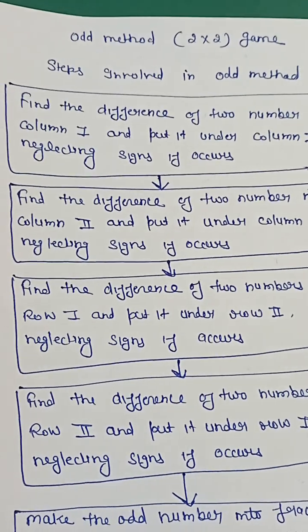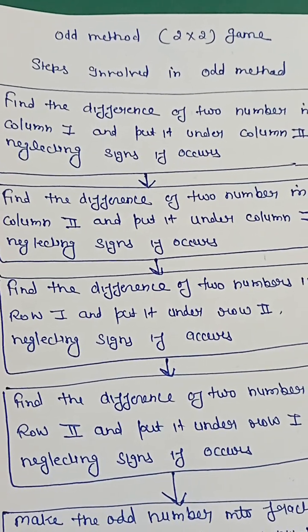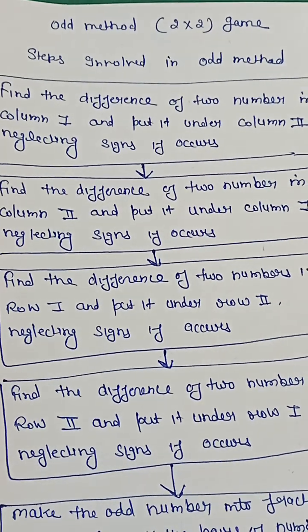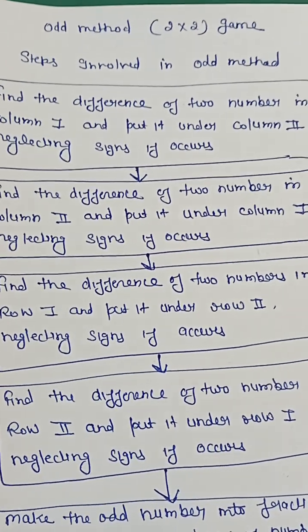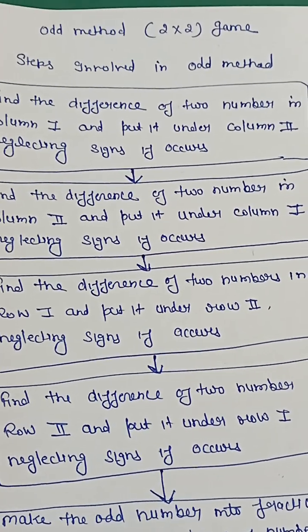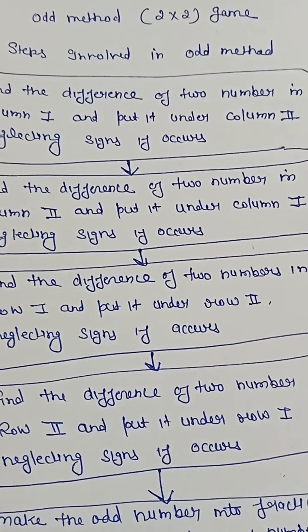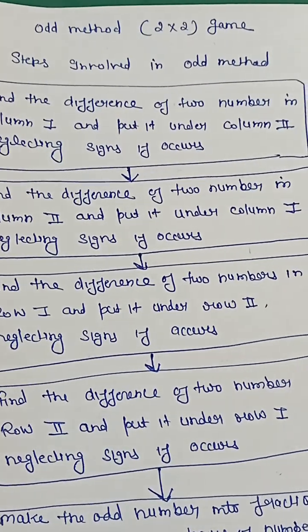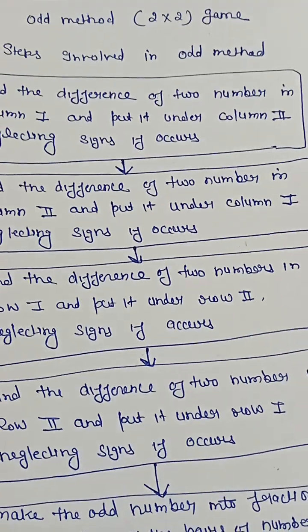All game problems where saddle point does not exist are called mixed strategy problems. The mixed strategy problem maximum of row minima will not be equal to minimum of column maxima. Both players will use different strategies with certain probability to optimize.